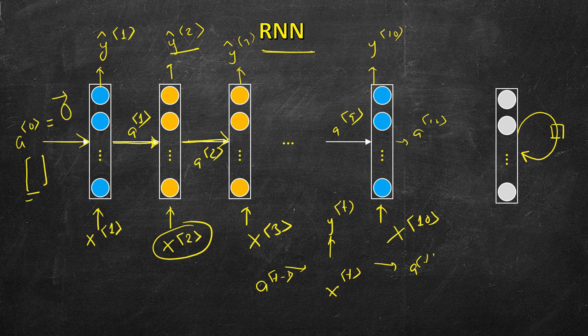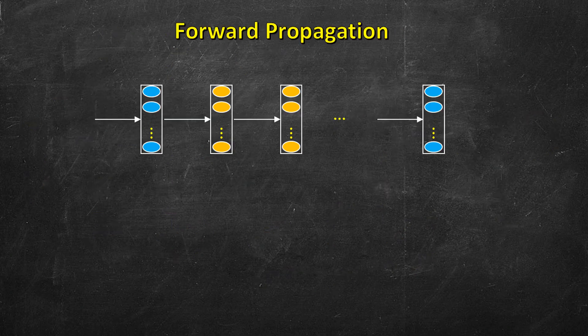A square shaded box in the compact diagram denotes a delay, because we process the first word, then the second, and so on. The loop denotes the recurrent relationship. The expanded diagram on the left is called the unfolded diagram of the compact one on the right. When you see the compact diagram, you should think of it like the unfolded one. Now let's see forward propagation for this recurrent neural network model.